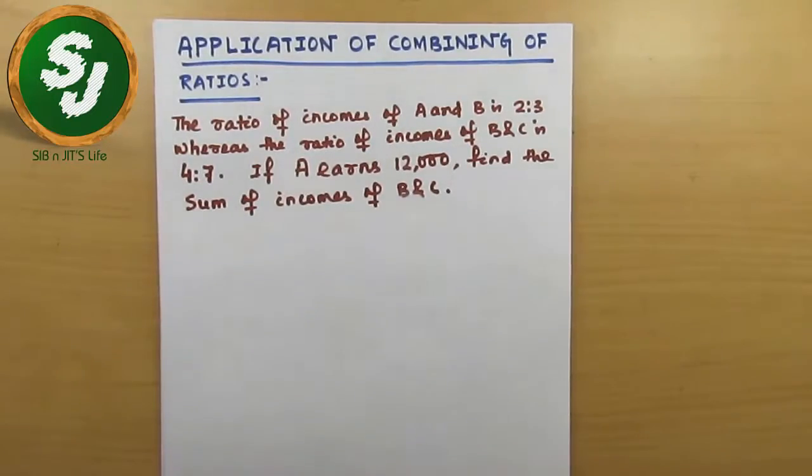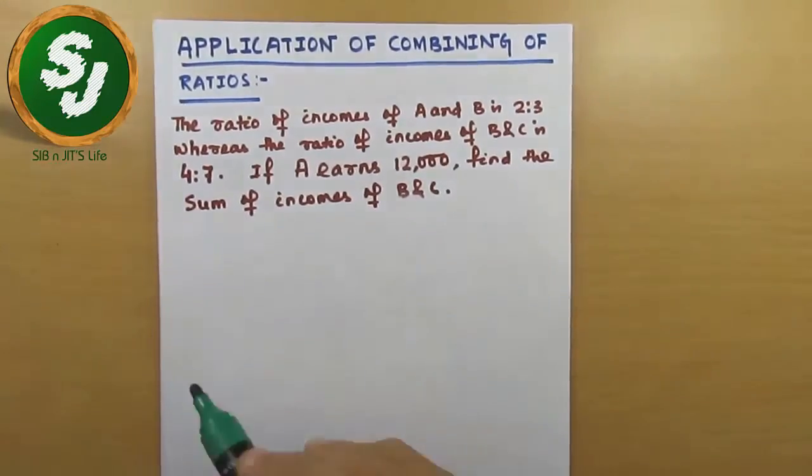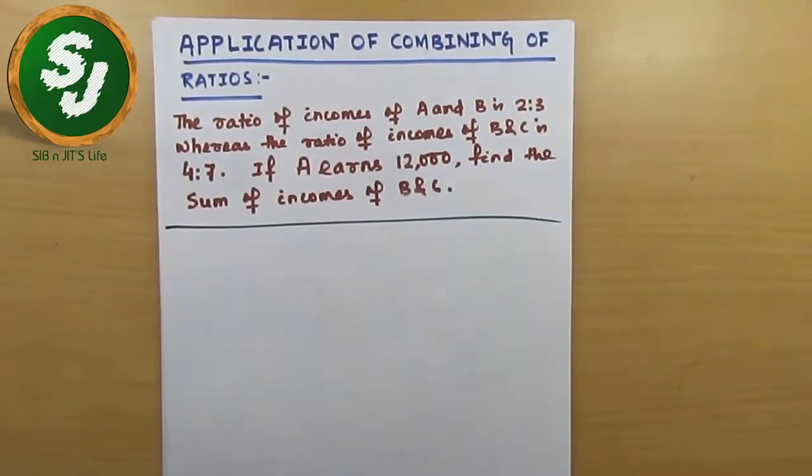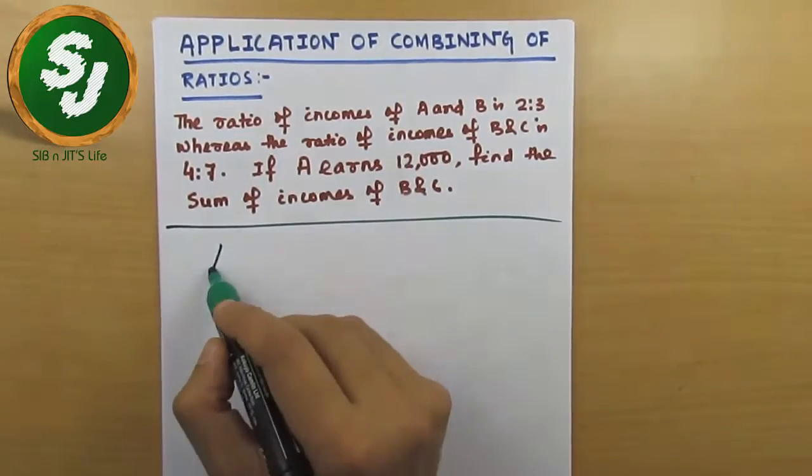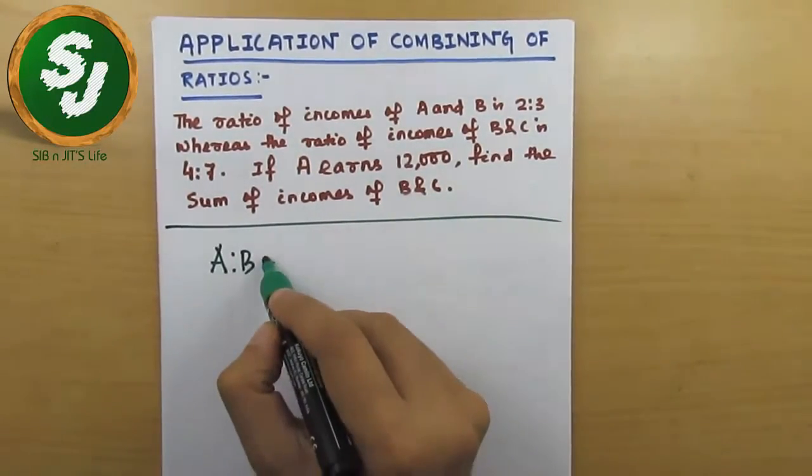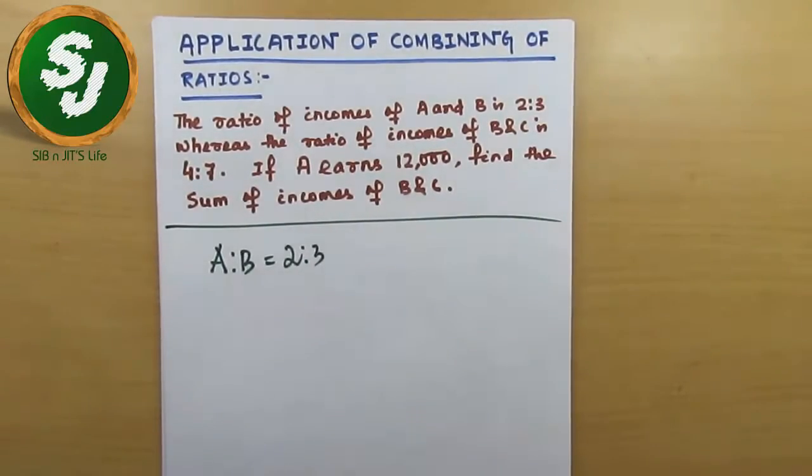In this question, let me read this for you. The ratio of incomes of A and B is 2 is to 3, so A is to B equals 2 is to 3, the ratio of their incomes.